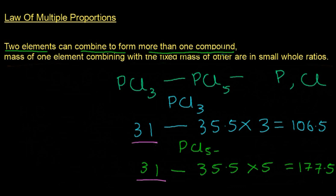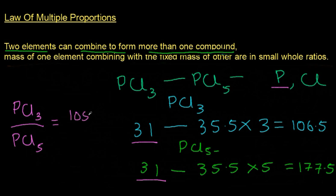Phosphorus has fixed mass in both compounds. So we take the ratio of chlorine in PCl₃ to chlorine in PCl₅, which is 106.5/177.5. On further simplification, chlorine is present in the ratio of 3:5, which is again a simple whole number ratio confirming the Law of Multiple Proportions.